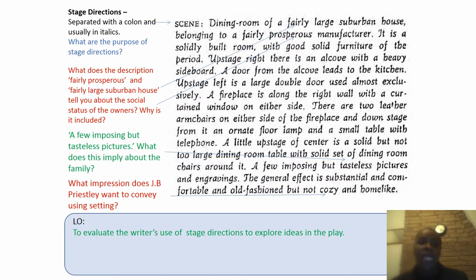He really gives a clear description of where this is set. He sets the stage, sets the scene. These people are wealthy, they're well off, they have real substantial furniture. He goes on to talk about the things that they own, and it really gives an impression of their social class and social status.